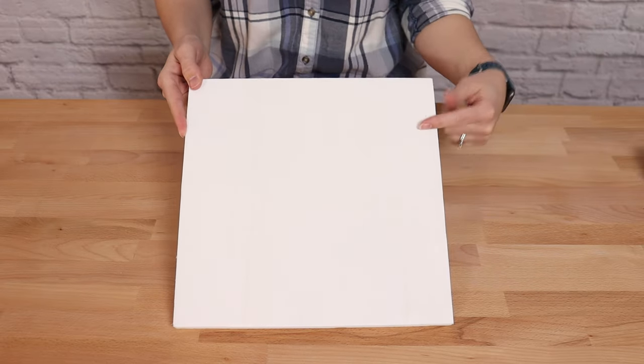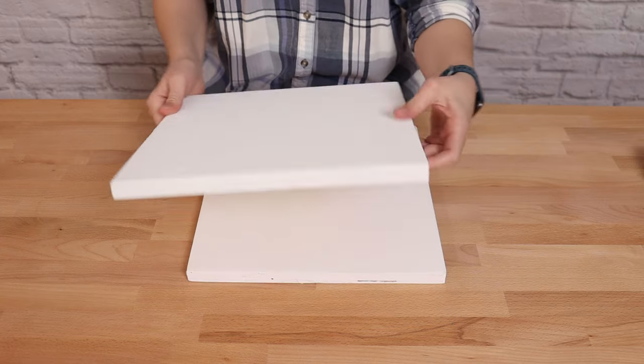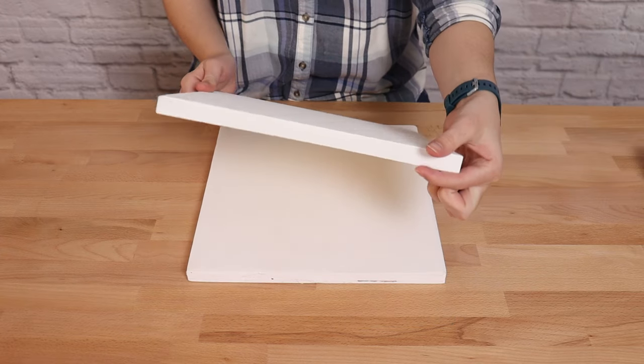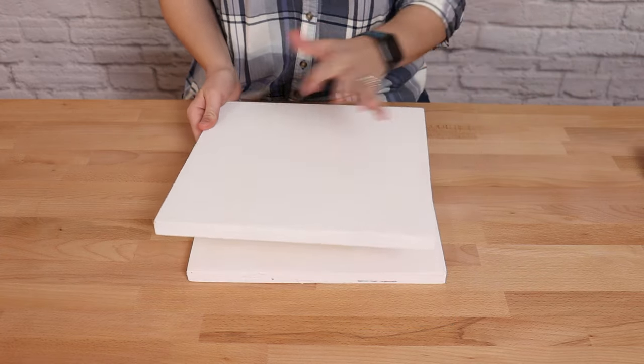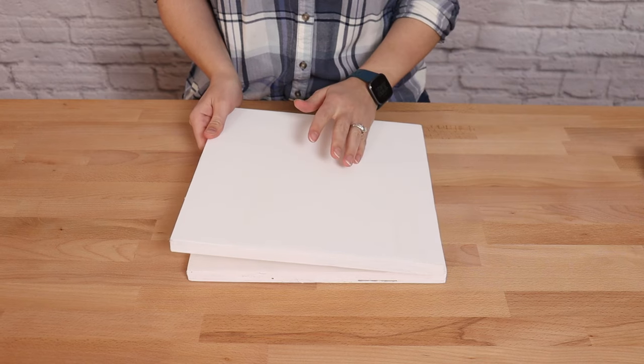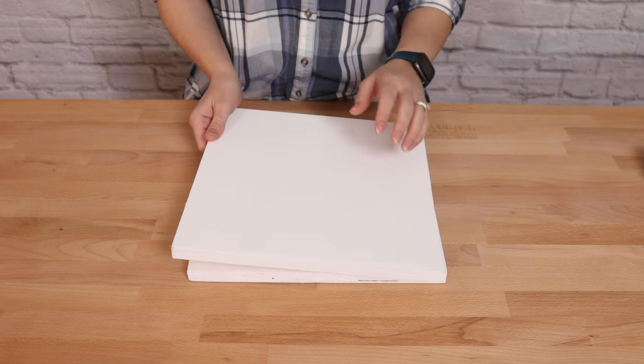The first part we need to make is the bases of the arch. This is made from two 12 inch by 12 inch square pieces of three-quarter inch thick plywood. You want to make sure you use plywood and not particle board as that will be much stronger and sturdier for our arch.